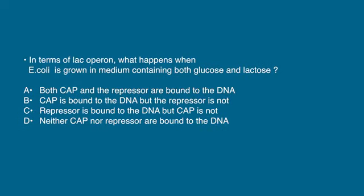Question 2: In terms of the lac operon, what happens when E. coli is grown in a medium containing both glucose and lactose? A. Both CAP and the repressor are bound to the DNA. B. CAP is bound to the DNA, but the repressor is not. C. Repressor is bound to the DNA, but CAP is not. D. Neither CAP nor the repressor are bound to the DNA. In the presence of glucose, cyclic AMP is not produced, so CAP is not activated and cannot bind to the CAP binding site. Lactose binds with the repressor, so the repressor cannot bind to the operator. The answer is option D.